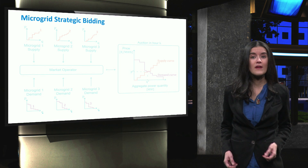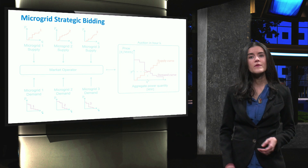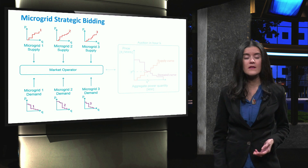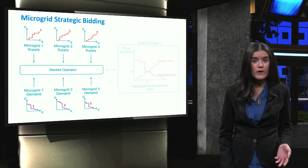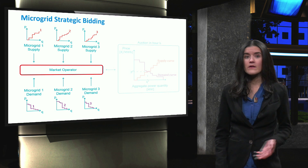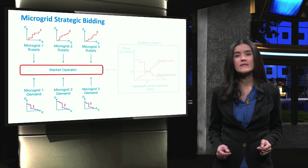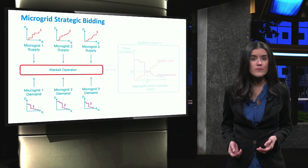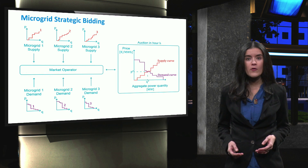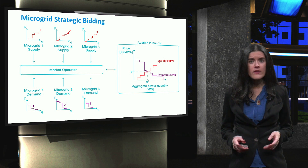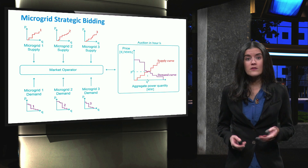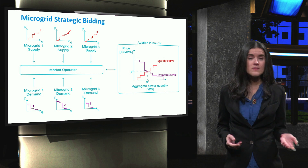In the centralized control architecture, a number of microgrids can submit their supply or demand bids into the auction on an hourly basis. The market operator evaluates all the bids received and creates the aggregate supply-demand curve, based on demand and supply power quantities. Then, a unified marginal price is determined by the intersection between the aggregate demand and supply curves.